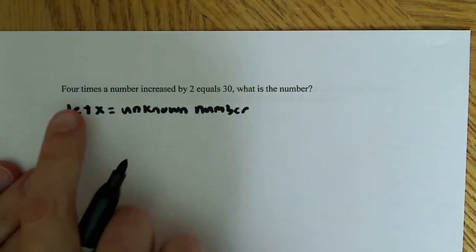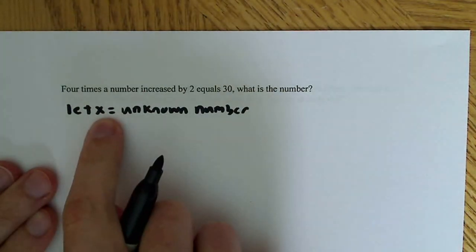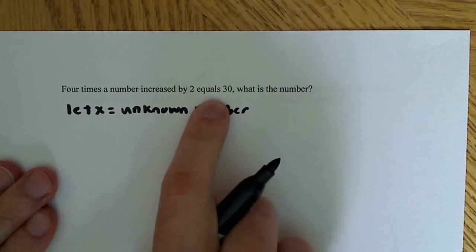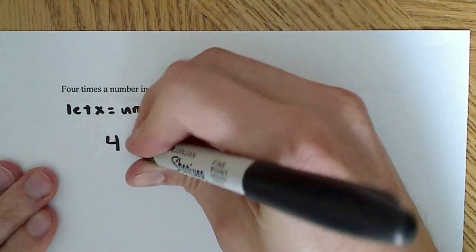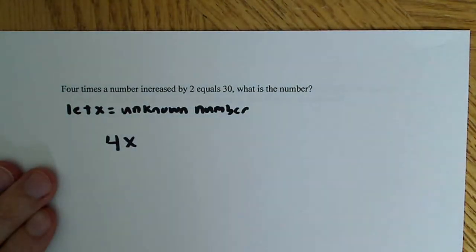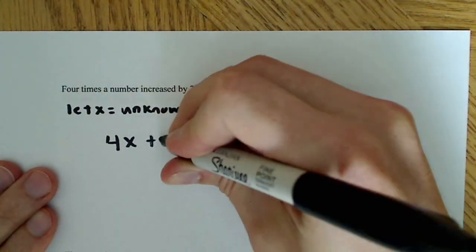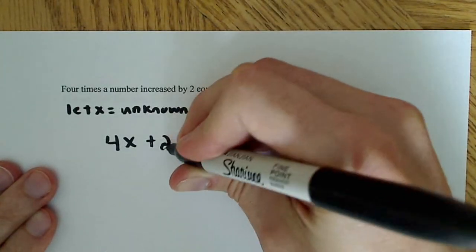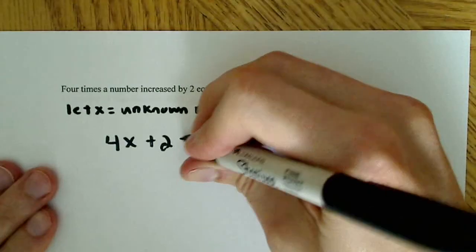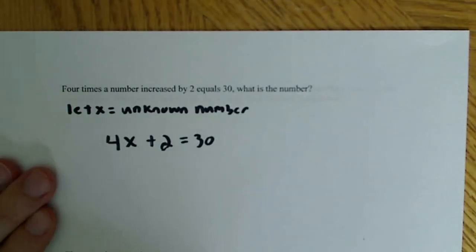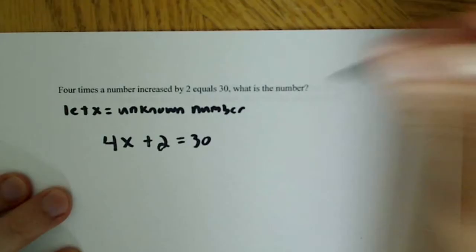Let's go back through and see what information we can get from the problem. It says 4 times a number — x in this case — increased by 2. So 4 times some number x, and increased by 2. Increased simply means addition — you're going to add 2. So increased by 2 is equal to 30. Right there, you generated your first equation from a word problem.